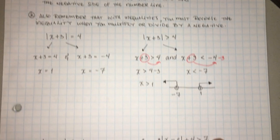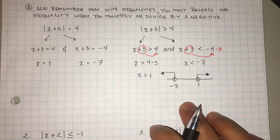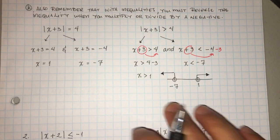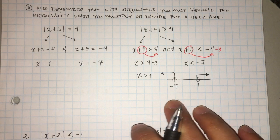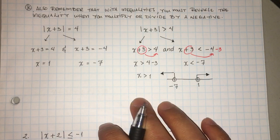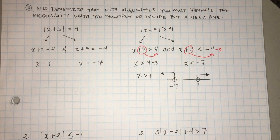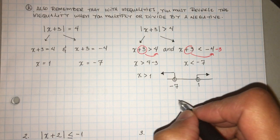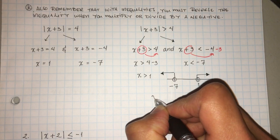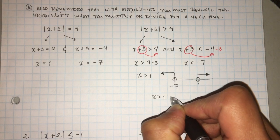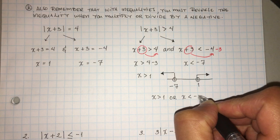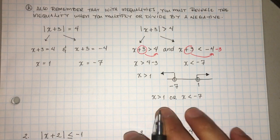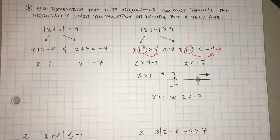So this is the solution, and the way you write it is what's called a compound inequality. So it's either/or — either this one or this one. The way you write the answer is: x is greater than 1 OR x is less than negative 7. And that's how you would write it for your professor.